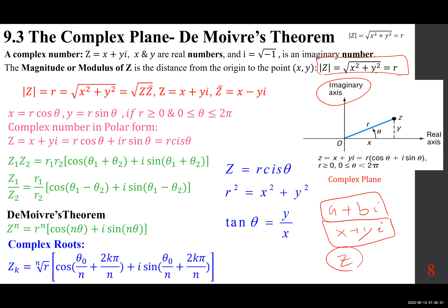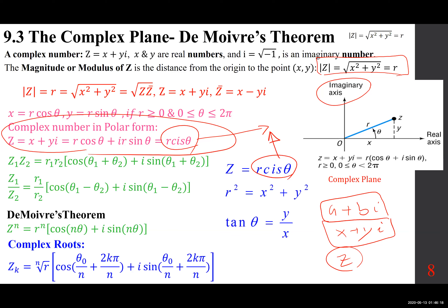In polar form, Z which is x plus yi becomes R cosine theta plus i R sine theta. Here's a shorthand notation — R cis theta. R cis theta means R times (cosine theta plus i sine theta). This is a shorthand notation — instead of writing the whole thing you can write R cis theta and it means the same thing. Just as polar.